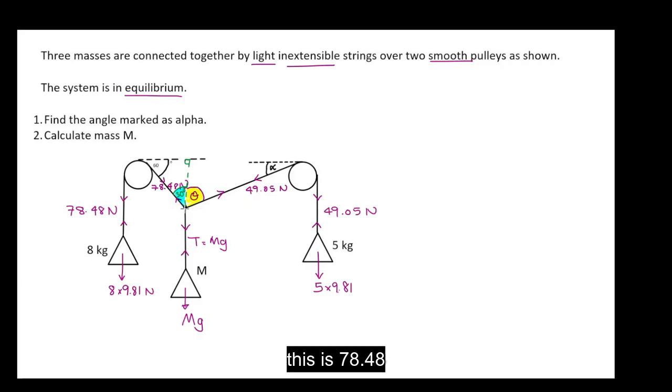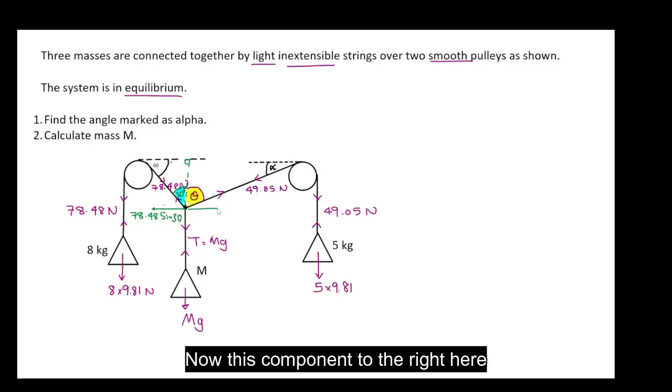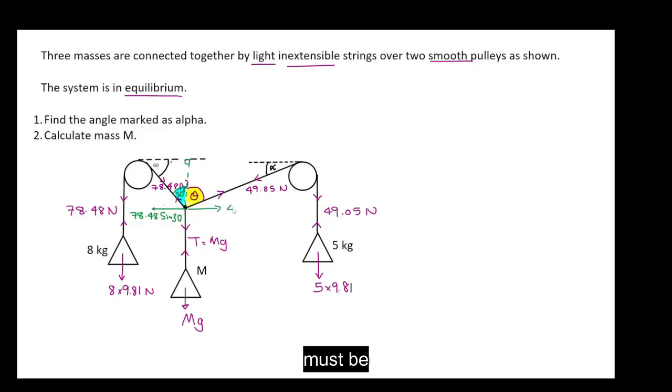So this is 78.48 sine 30. So this component here I can mark as 78.48 sine 30. Now this component to the right here must be 49.05 sine theta.